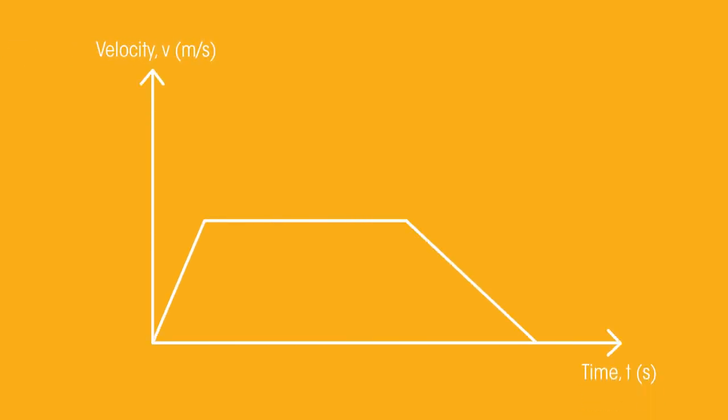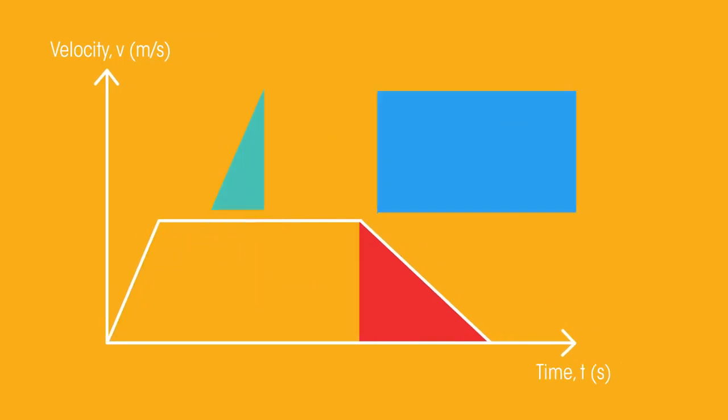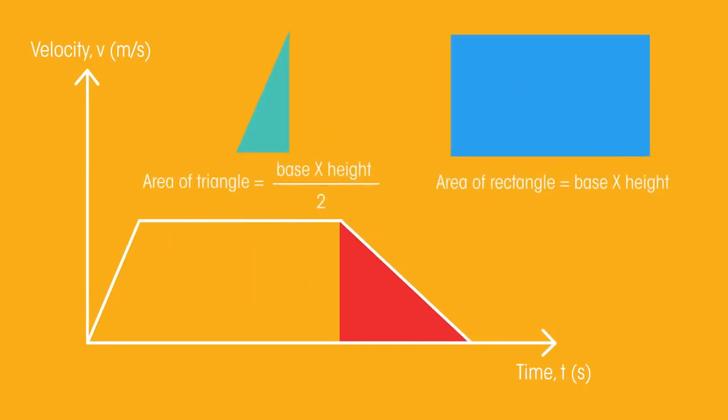The area won't always be quite so simple to calculate. Velocity time graphs more commonly look like this. We can calculate the area underneath the line by cleverly splitting the area into triangles and rectangles. Remember that the area of a triangle is the base multiplied by its height divided by 2.